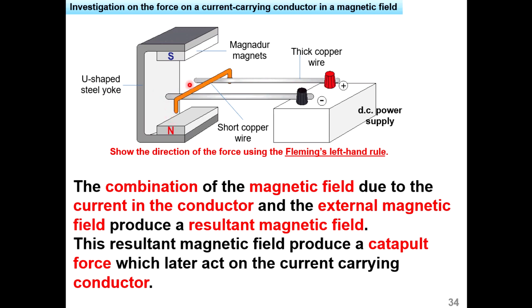When current flows, there are two magnetic fields: one formed by the conductor carrying current (using the right-hand grip rule from Chapter 3.1 to determine its direction), and another from the magnet going from north to south. The combination of the magnetic field due to the current in the conductor and the external magnetic field due to the magnet will produce a resultant magnetic field. That resultant magnetic field will produce a catapult force which acts on the current-carrying conductor, making it move.